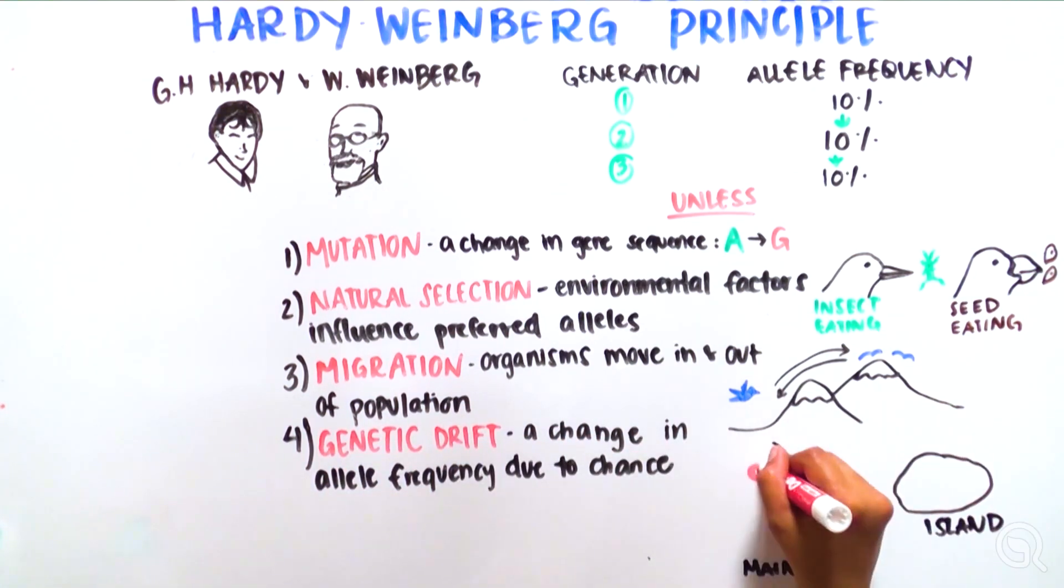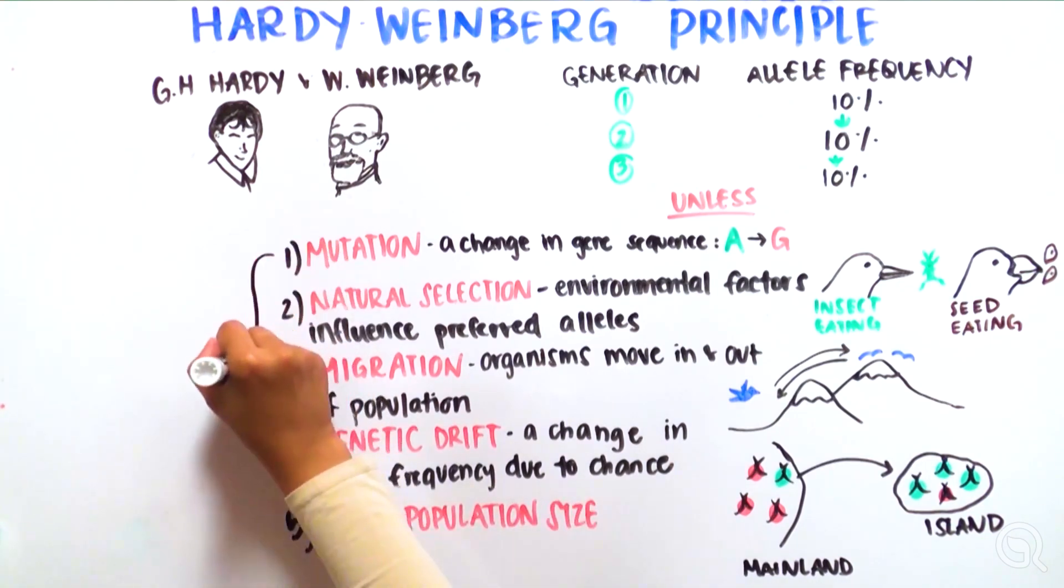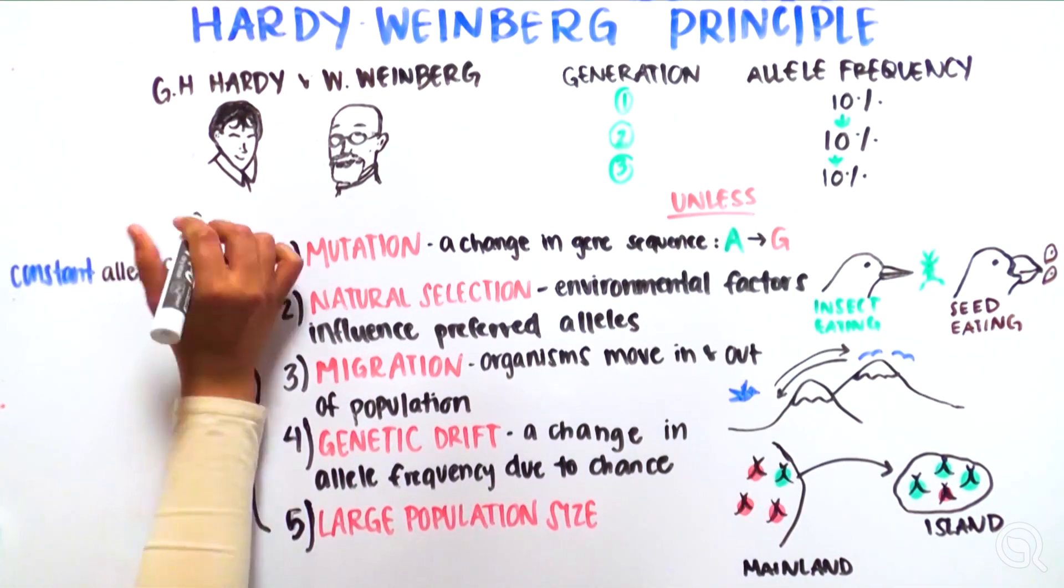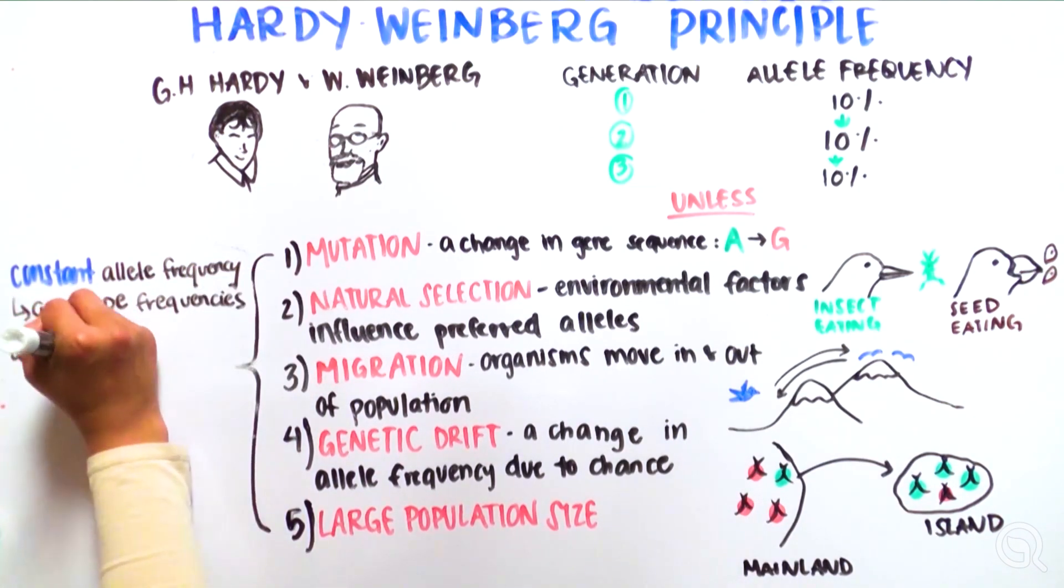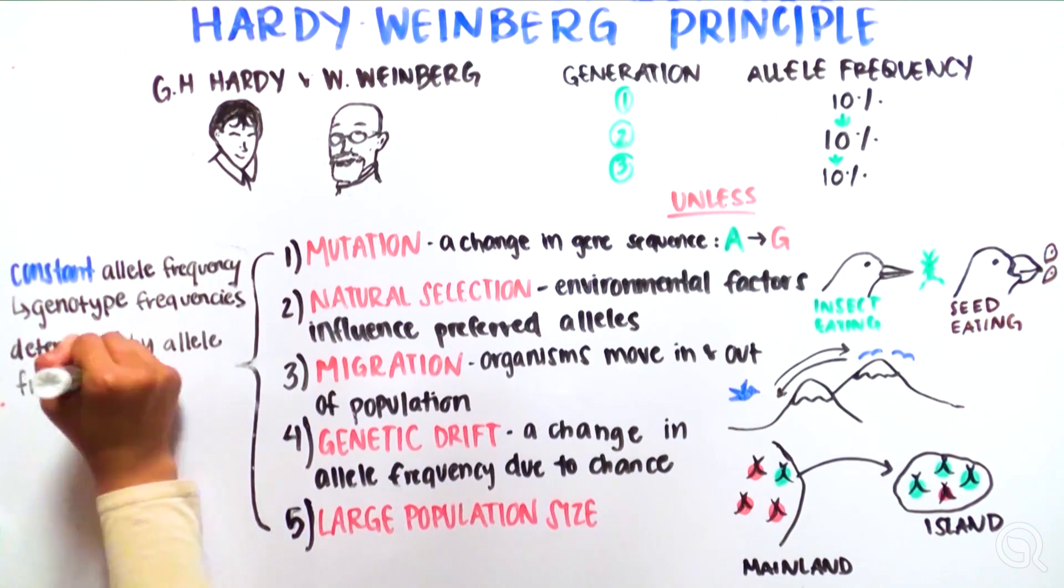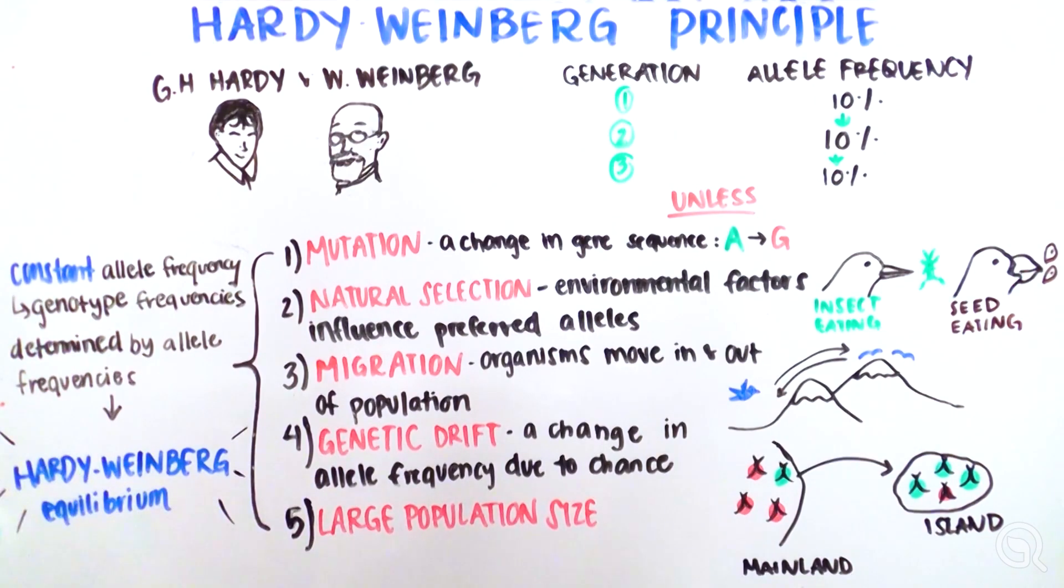In addition to assuming no change in these four areas, the Hardy-Weinberg Principle also assumes a large population size. When these assumptions are met, the frequency of alleles in a population will remain constant, and the genotype frequencies will be determined by the allele frequencies. This is known as the Hardy-Weinberg Equilibrium, a tool population geneticists use to test if a population is in equilibrium or if external forces are causing the genetics of a population to change.